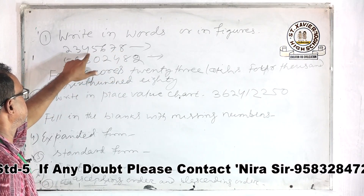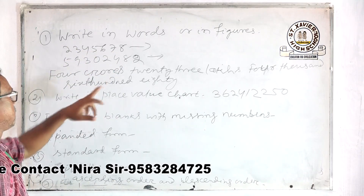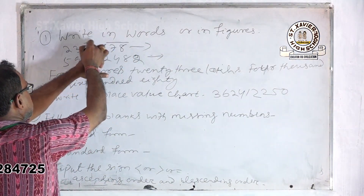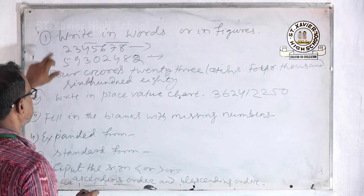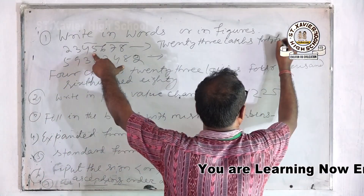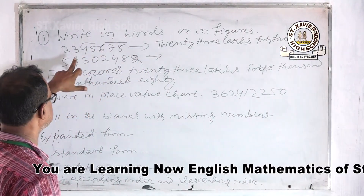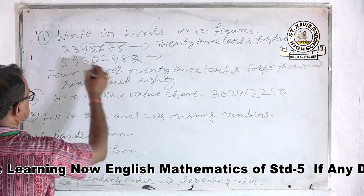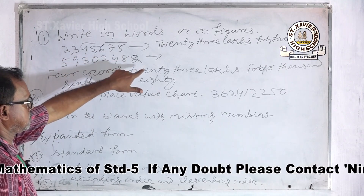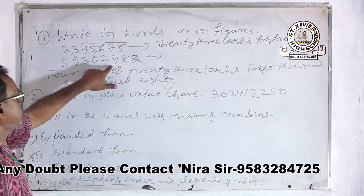This first number has seven digits. Reading from ones, tens, hundreds, thousands, ten thousands, then lakhs — it is twenty-three lakhs, forty-five thousand, six hundred seventy-eight. In the international way, that is two million, three hundred forty-five thousand, six hundred seventy-eight.